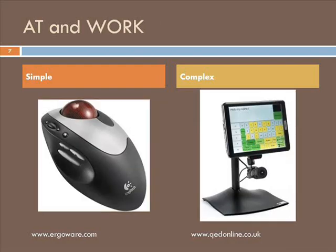A simple option at work for people with limited movement in their upper extremities is a mouse with a tracking ball. A complex system is an eye gaze response interface computer aid, also known as ERICA. It is used by people who have extremely limited body movement. The computer uses eye movement with software to use all programs, completely hands-free.